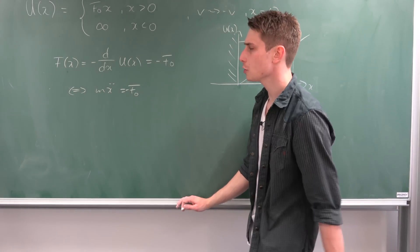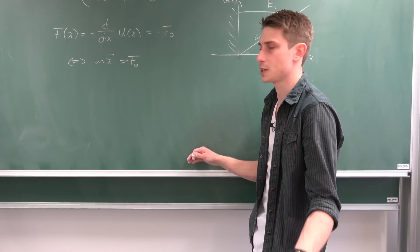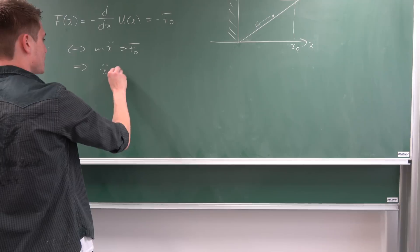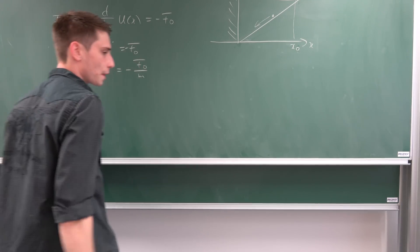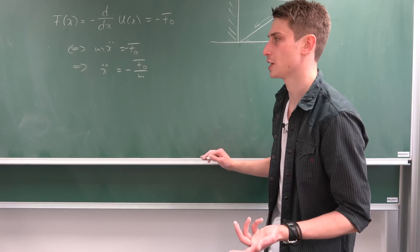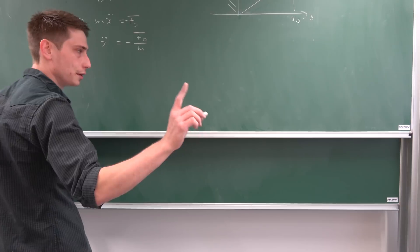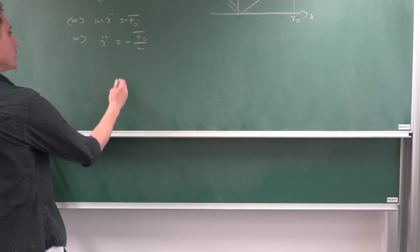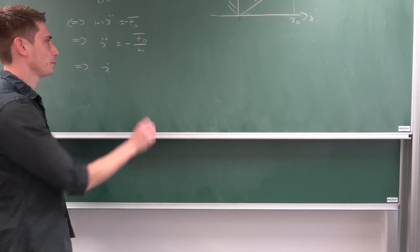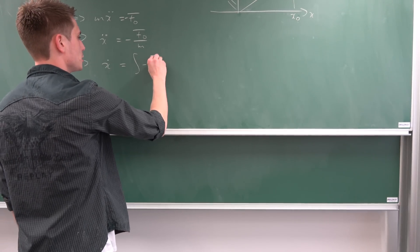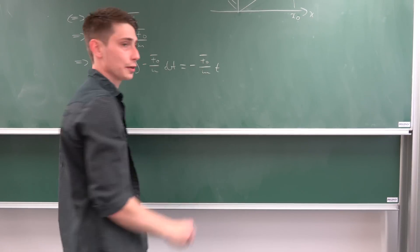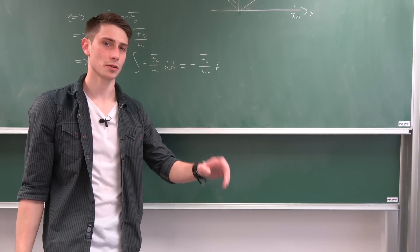We can divide both sides by the mass since it's not equal to zero. We now have a differential equation: x double dot equals negative f0 over m. It's quite easy to solve — we just integrate it twice. Integrating with respect to time the first time gives us the velocity x dot, which equals negative f0 over m times t. Since we have no bounds, we get an integration constant — a velocity v0, the velocity at t equals zero.